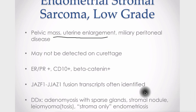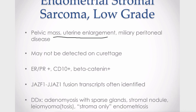The differential diagnosis includes adenomyosis with sparse glands, which we do see on occasion. An endometrial stromal nodule, although that's usually more superficial — a single focus without this pattern of myometrial infiltration. Cellular leiomyoma or leiomyomatosis, and possibly leiomyosarcoma can look like this. In the miliary type, stroma-only endometriosis can also be included in the differential.